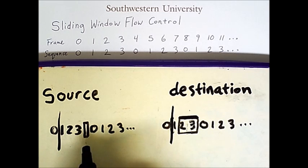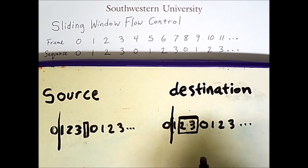There are no more frames in the window. This means that the source has reached the maximum number of frames it can send safely. This will prevent the source from overwhelming the destination.